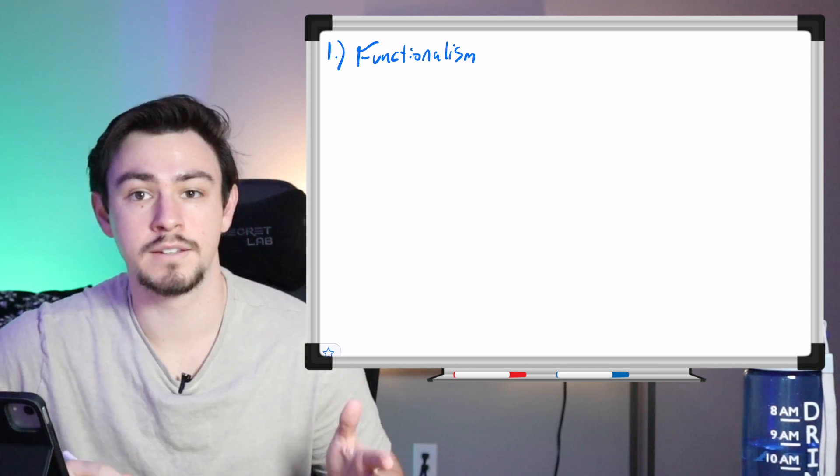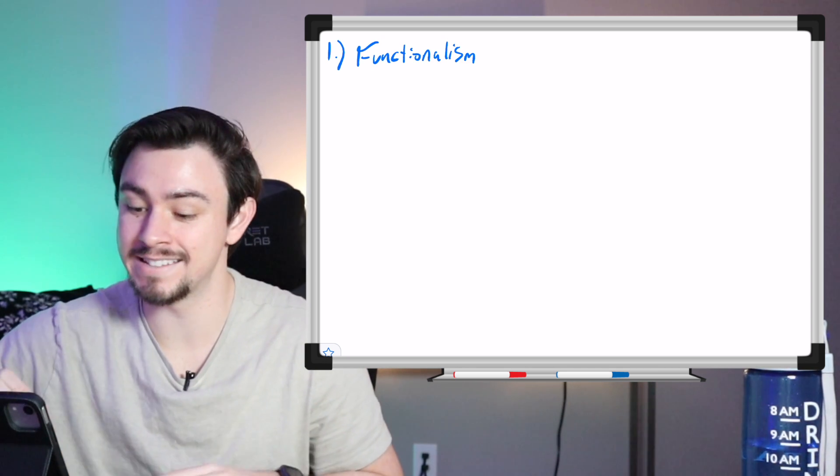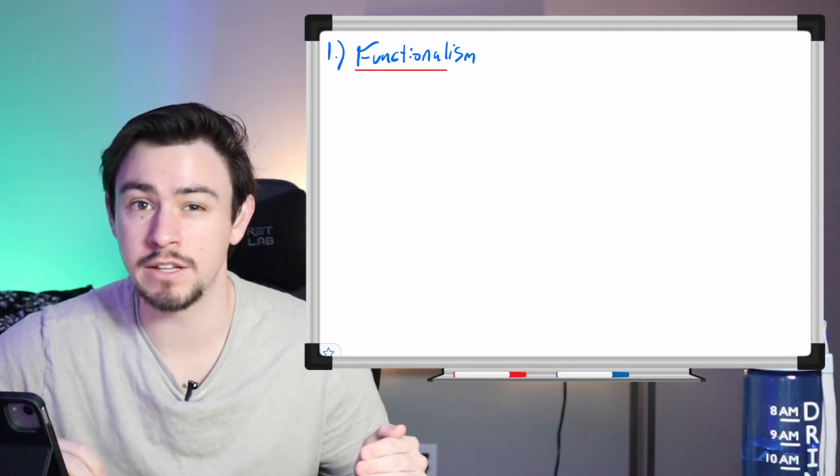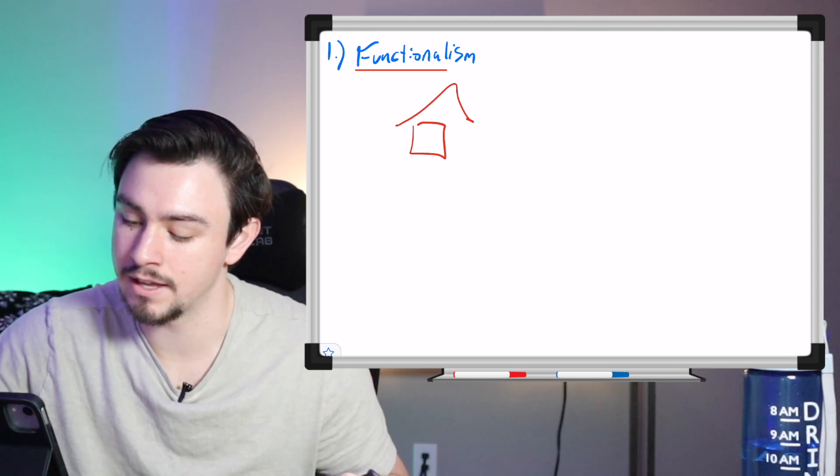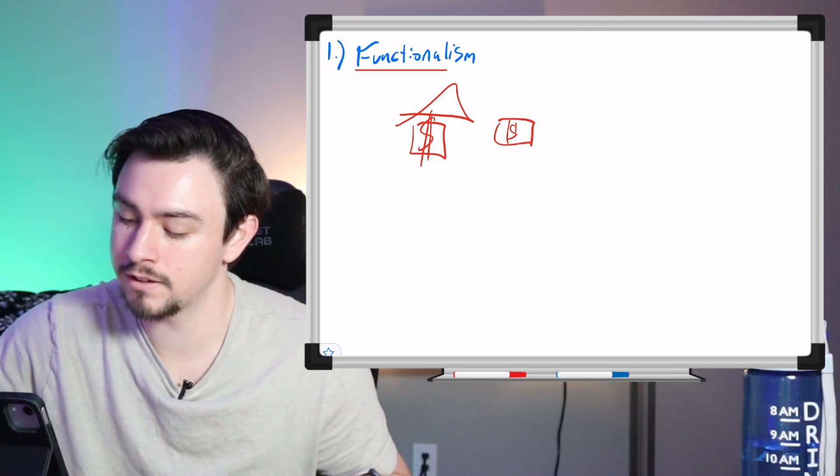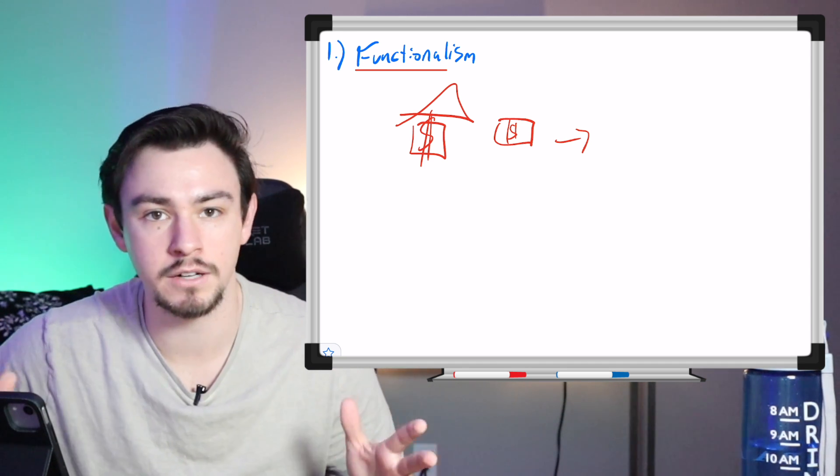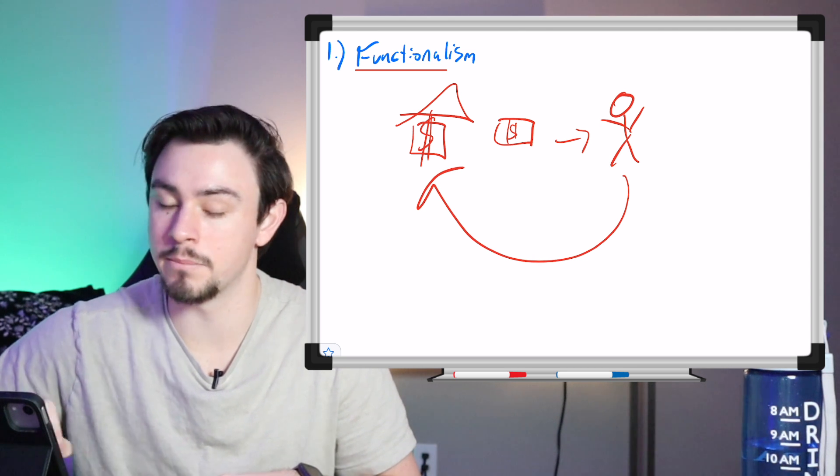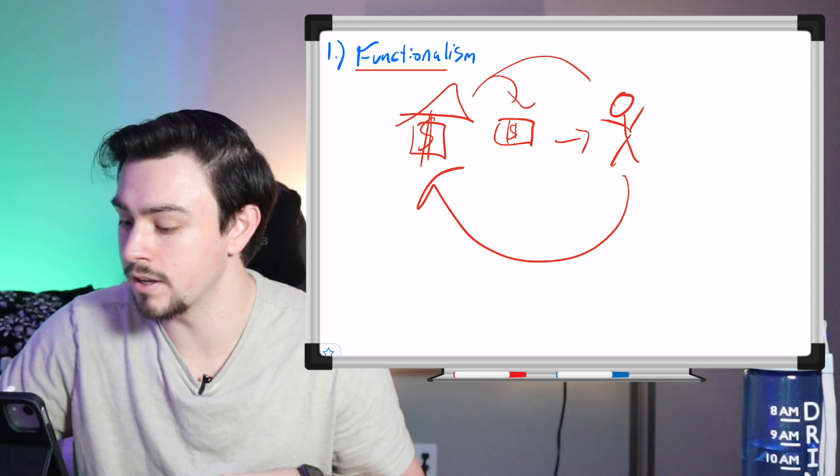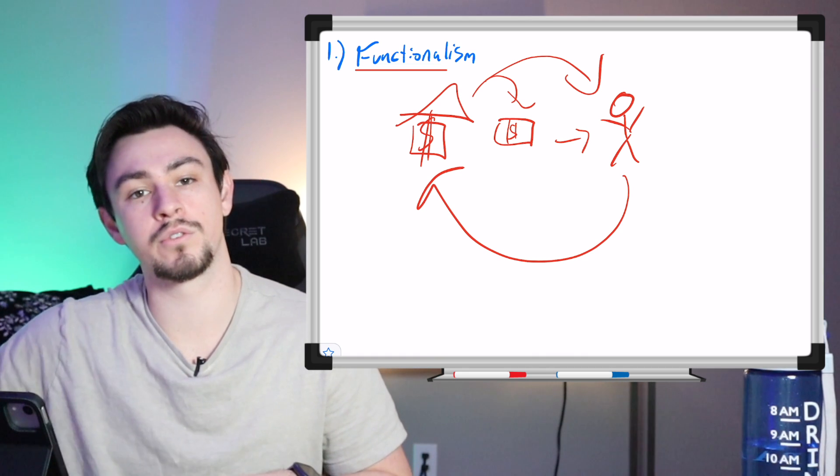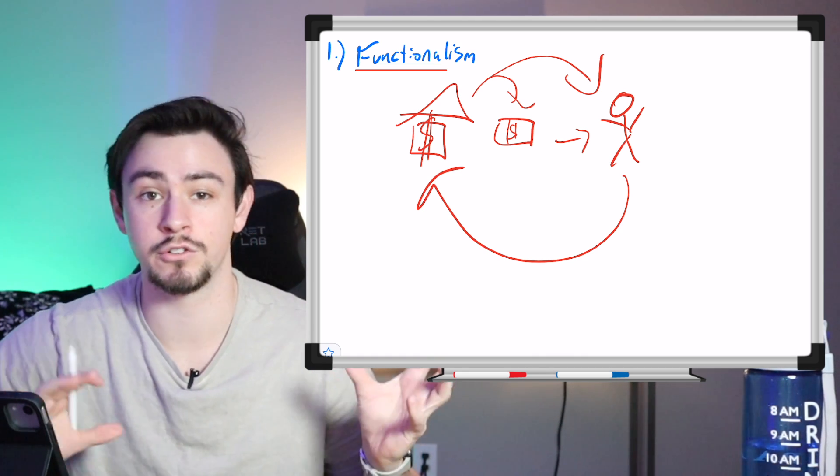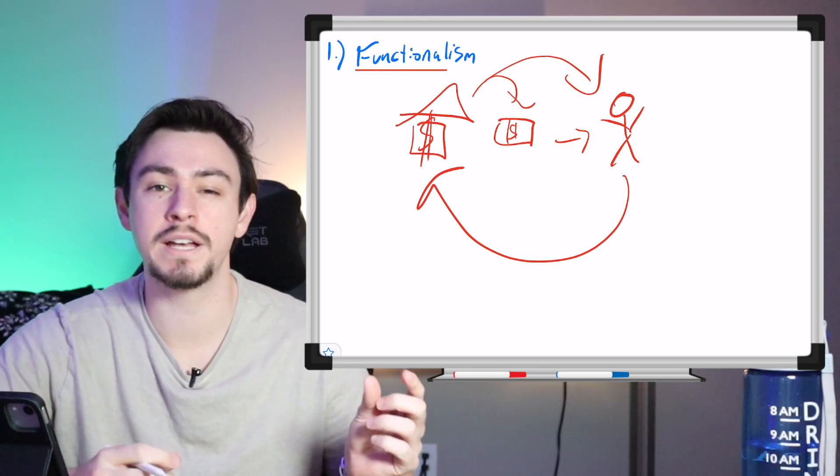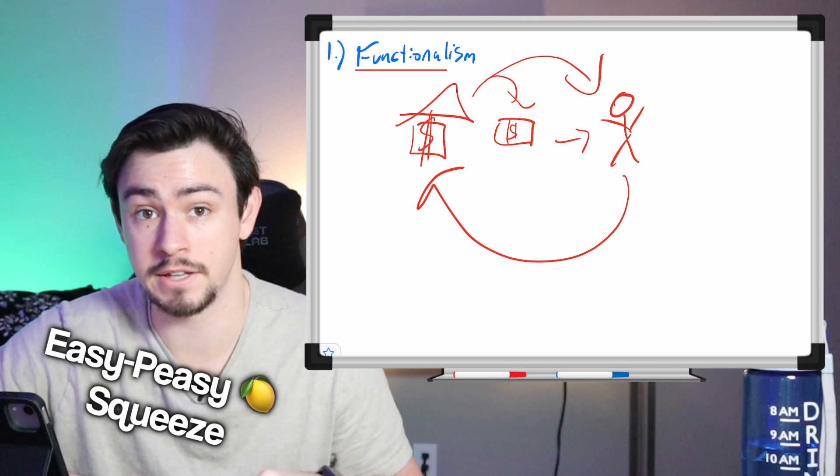The first one is called functionalism. Now, this one's pretty easy to remember. It's the idea that every individual and part of society plays a functional role. So let's take an example that I use in our high-yield book. Let's say we have a bank. Well, the bank loans us money so that we can go to med school and become a doctor and save lives, right? Well, we save the lives of the people at the bank. So the bank gives us money so that we can go and become doctors, and that serves a functional purpose to help us get what we want, but then our functional purpose is that we can save their lives, make their lives and their loved ones' lives a little bit easier. So we're all playing a functional role in society. That's functionalism.